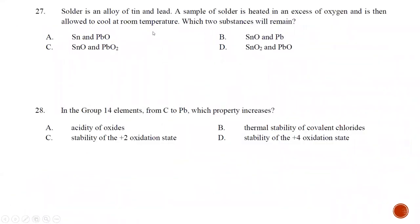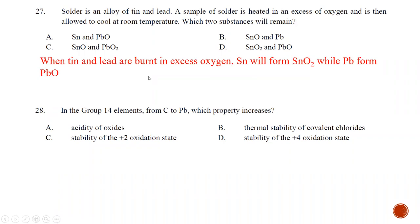Question number twenty-seven: a sample of solder containing tin and lead is heated in excess oxygen and then allowed to cool. Which substance remains? You must remember that tin is more stable as a plus four oxidation state while lead is more stable as a plus two oxidation state. The oxides formed are SnO2 and PbO. The answer is D.